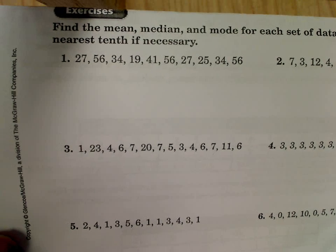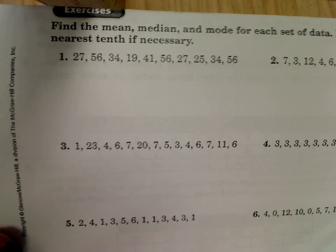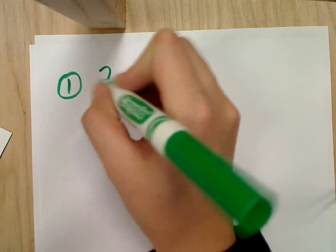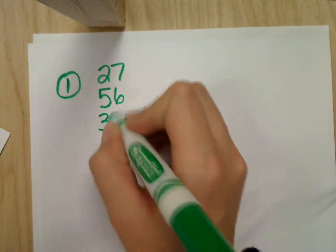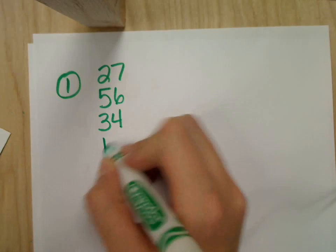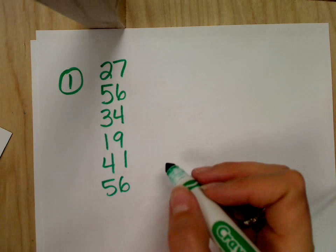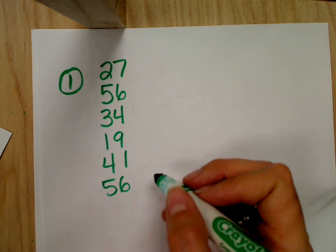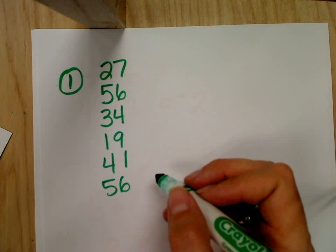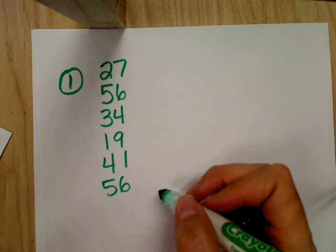And rather than trying to add them up like that, I'm going to go ahead and line them up vertically so that I can add them. So, twenty-seven, fifty-six, thirty-four, nineteen, forty-one, fifty-six. What if I don't want to add all of these numbers up at the same time? No, add them up two at a time. Okay, Shadi, no, you cannot use a calculator. We're in math class. It's all about learning how to add.